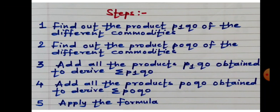Third step: add all the products P1Q0 obtained to derive Sigma P1Q0. Sigma means summation; the summation of all P1Q0 gives us Sigma P1Q0. Number 4: add all the products P0Q0 obtained to derive Sigma P0Q0, i.e. summation of all P0Q0 gives Sigma P0Q0. And number 5: apply the formula of Laspeyres price index number.